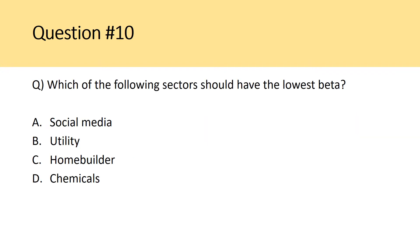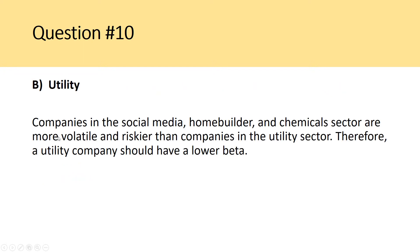Question 12: which of the following sectors should have the lowest beta? Beta captures the systematic risk of a company — if the market has a beta of 1 and a company has a beta of 2, when the market returns 1%, that stock returns 2%. Unsystematic risk is company-specific and can be eliminated through diversification, but systematic risk cannot. Social media would be quite risky; homebuilders and chemicals are very cyclical. Utilities are very safe and have the lowest beta. The answer is B — utility companies should have a lower beta than social media, homebuilder, or chemical sector companies.